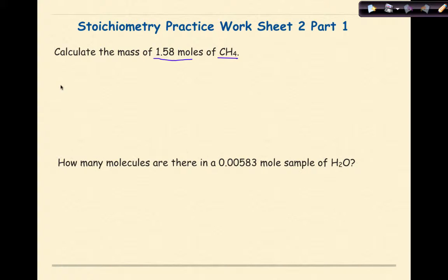First thing I want to do is write out my given. 1.58 moles of methane, CH4. I'm going to put a multiplication sign and a line. Whatever unit I start with is going to go on the bottom. Moles of methane. And what I want here is the mass. And we know that mass is represented by grams. If I find the gram formula mass of CH4, it is 16.